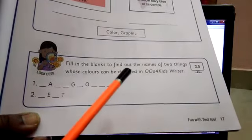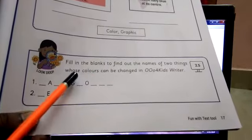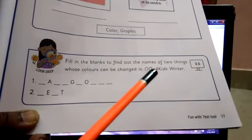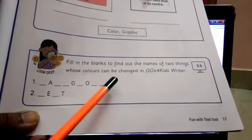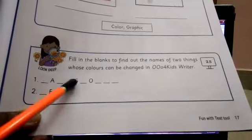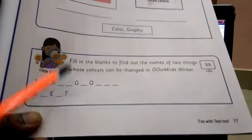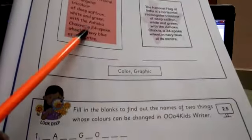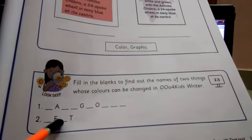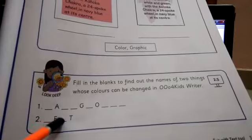See here, fill in the blanks to find out the names of the two things whose colors can be changed in OOo4Kids Writer. Colors changed - missing letter. One is background. We changed the background, yes or no? And one more is text. Text colors also we changed. Complete it and turn the page.